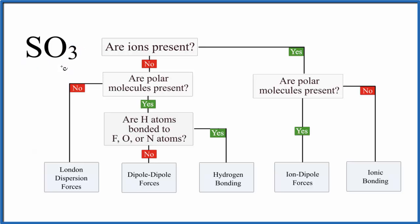So the first question we ask, we'll use this flowchart here to figure out the intermolecular forces, is do we have ions present? So there's no negative or positive after SO3 here, so we do not have ions present. So we go to the next piece here.